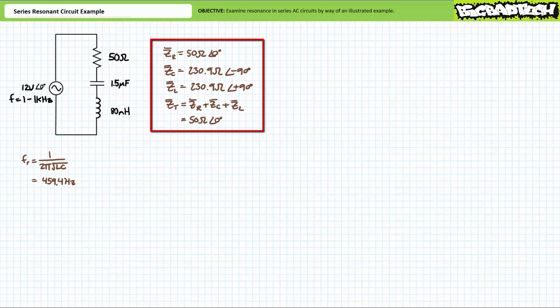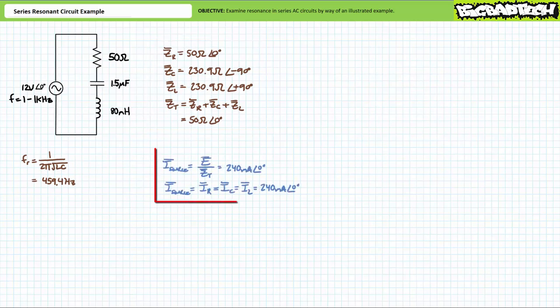The total impedance for this series combination of three elements at the resonant frequency is ZR plus ZC plus ZL. Substituting their given values, we find total impedance to be 50 ohms at an angle of zero degrees. ZC and ZL, being equal in magnitude yet of opposite polarity, effectively cancel each other out such that the source is under the impression the circuit consists of only the resistive component. An application of Ohm's law demonstrates source current will be supply voltage over total impedance. Substituting in our given values, we find source current to be 240 milliamperes at an angle of zero degrees. A phase shift of zero degrees indicates source current is indeed in phase with supply voltage, as we'd expect for the resonant condition.